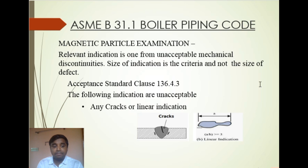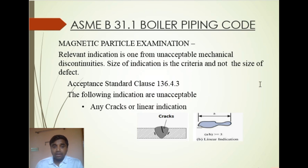Next is magnetic particle examination. A relevant indication is one arising from an unacceptable mechanical discontinuity. Remember: the size of the indication is the criterion, not the size of the defect. The acceptance standard clause for magnetic particle examination is 136.4.3 of ASME B31.1.